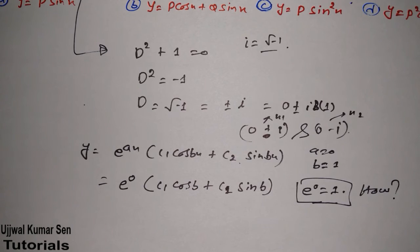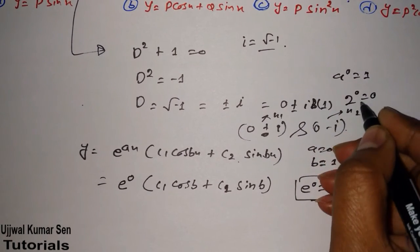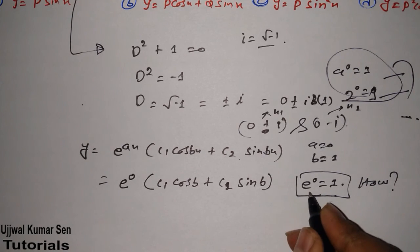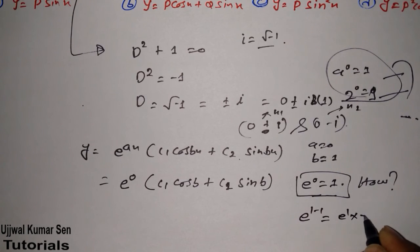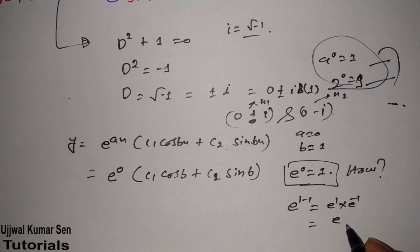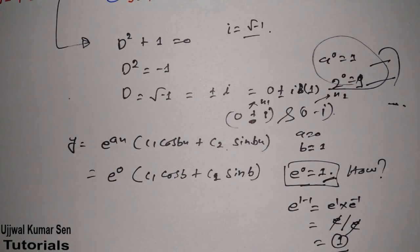Why is e to the power 0 equal to 1, or any constant to the power 0? Suppose a to the power 0 equals 1, even 2 to the power 0 equals 1. We can write e to the power 0 as e to the power 1 minus 1, and since in exponents we add powers, that gives e to the power 1 times e to the power minus 1, which is e times 1/e, so e cancels and we get 1. The same logic applies: 2 to the power 0 equals 2 to the power 1 minus 1, so 2 divided by 2 equals 1. This is applicable to anything that is constant.